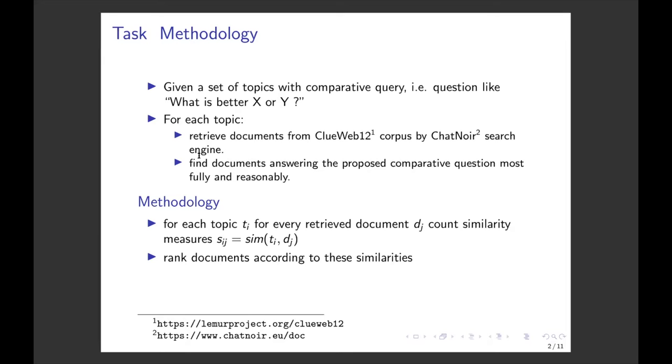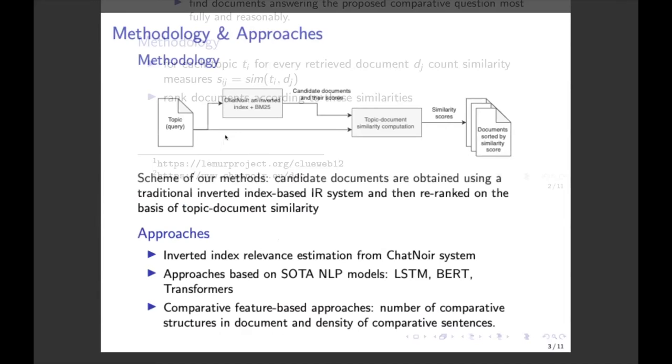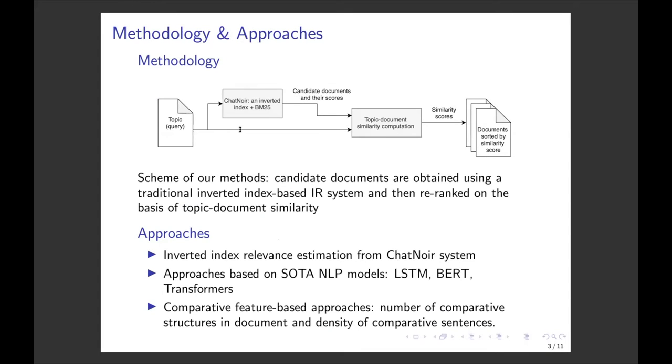The common methodology which we used was the following: for each topic ti and for every retrieved document dj, we count similarity measures cij and we rank documents according to this similarity. The similarity measures were counted in different ways depending on approaches. On this slide number two, there is a scheme of our approaches. We have a topic, we have inverted documents, we count similarity score and we rank documents.